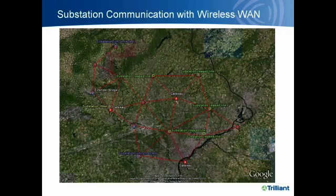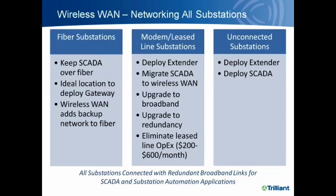With a wireless WAN deployed and interconnecting these substations, the fiber-based substations deploy a gateway to start the wireless WAN network. The green lease-line substations get extenders to provide connectivity with a private high-bandwidth network, and then the network extends out even to the substations that previously had no communications whatsoever. By connecting all substations with two-way communications through a wireless WAN, you now have broadband connectivity with redundant self-healing links that enable applications such as SCADA.